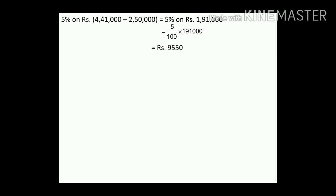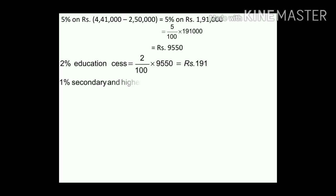Now we also have to calculate 2% Education Cess and 1% Higher and Secondary Education Cess. 2% Education Cess = 2/100 × 9,550 = rupees 191. Next, 1% Secondary and Higher Education Cess = 1/100 × 9,550 = rupees 95.50.